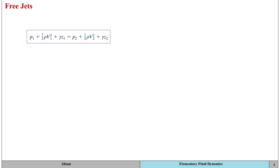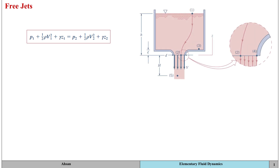First of all, we're going to look at free jets, and to do that, we're going to look at this diagram of a tank in which vertical flow downwards is taking place. An example of this kind of flow can be a tea kettle that has a nozzle or a tap attached at the bottom, or your coffee flask that has a tap or a nozzle attached at the bottom, which is being indicated by the opening here.